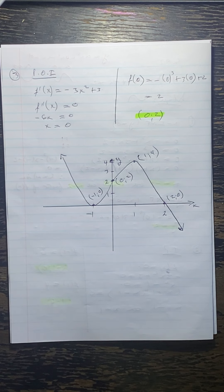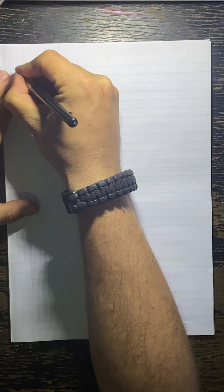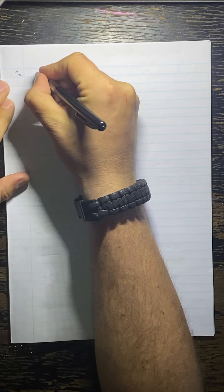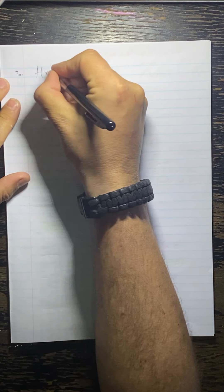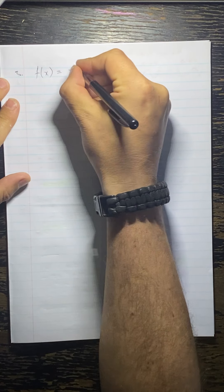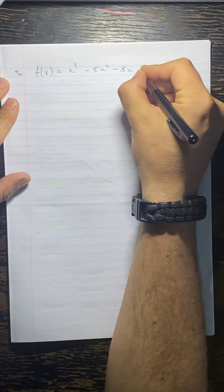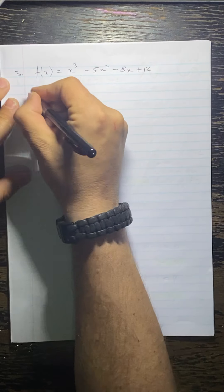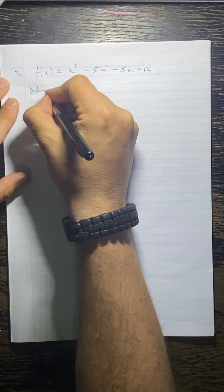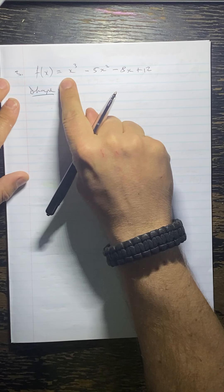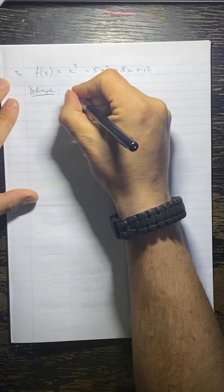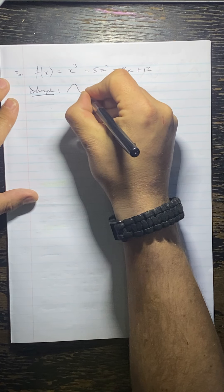That's pretty much how you plot a cubic. I'm going to do one more example — this is going to be number 3. They're asking us to plot f of x equals x cubed minus 5x squared minus 8x plus 12. The first thing I'm going to look at is the general shape: because our a value is positive, I know the graph is going to go up, then down, then up.